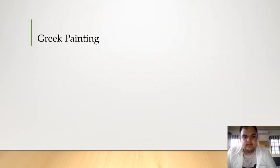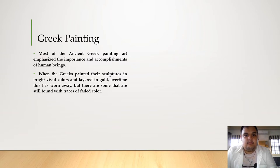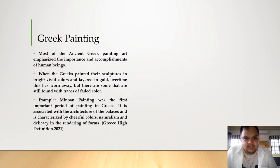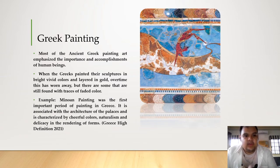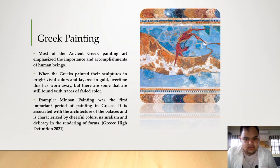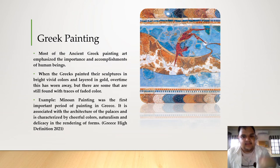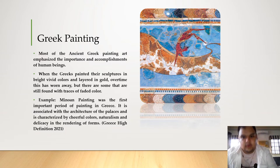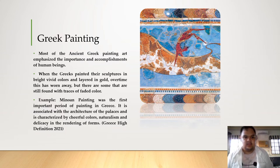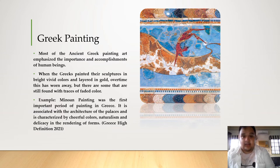Next, we have Greek painting. Back then, Greeks would use these paintings to emphasize the importance and accomplishments of human beings. When the Greeks painted their sculptures, they used bright, vivid colors and layered them in gold. Over time, this faded as they stopped creating sculptures, and they instead turned to paintings to show their accomplishments and tell stories. Sadly, most of the Greek paintings were lost and cannot be found.